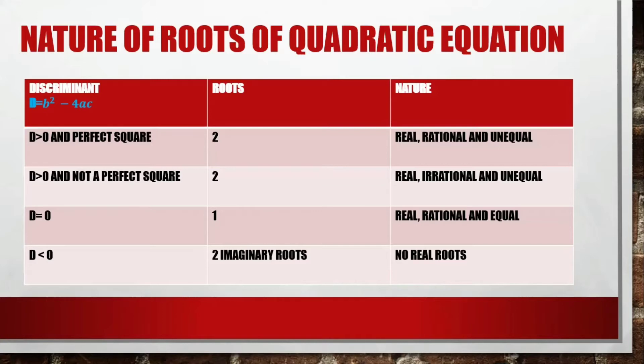When the discriminant is negative, there are no real roots — that is why they are called imaginary roots.